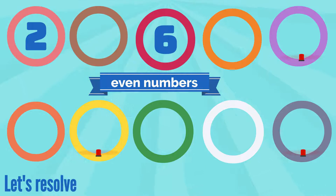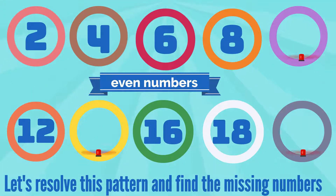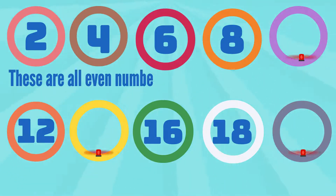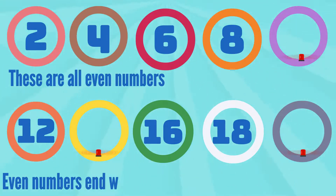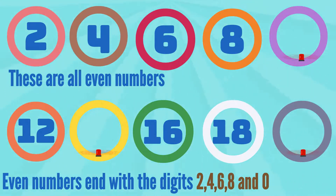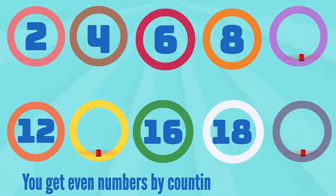These are even numbers. Let's resolve this pattern and find the missing numbers. Even numbers end with the digits 2, 4, 6, 8, and 0. You get even numbers by counting in twos from 2.